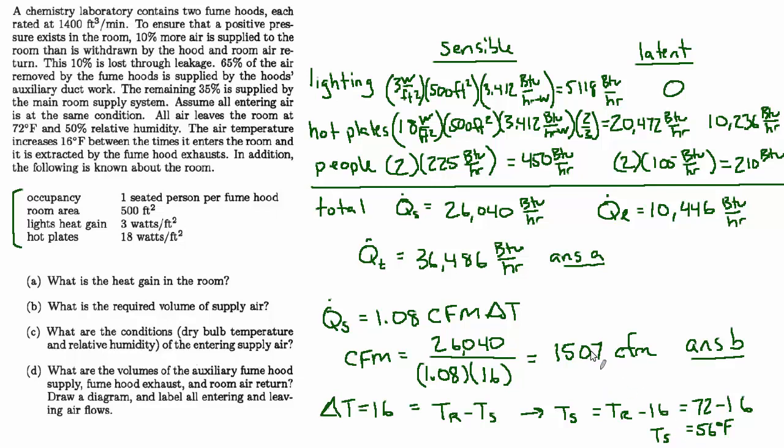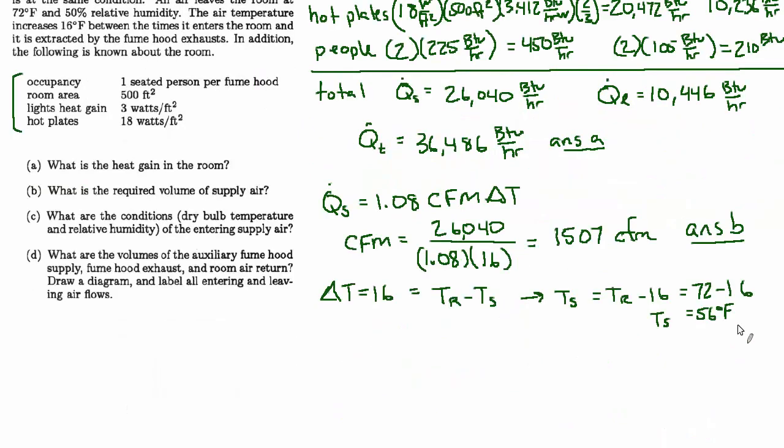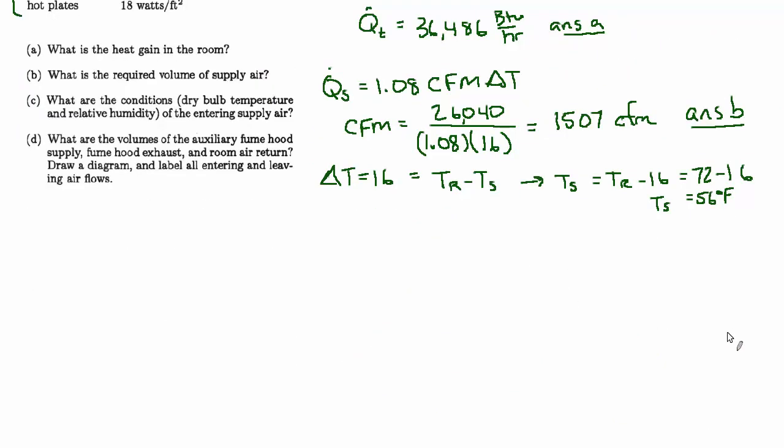So the way we're going to go about this is let's first find the humidity ratio of that leaving air. So the leaving air is 72 degrees Fahrenheit and 50% relative humidity, and on the psych chart or psychrometric calculator you can look up the humidity ratio, which I'll call omega 2, where I'll reserve omega 1 as being the supply condition. So that turns out to be 58.6 grains per pound.